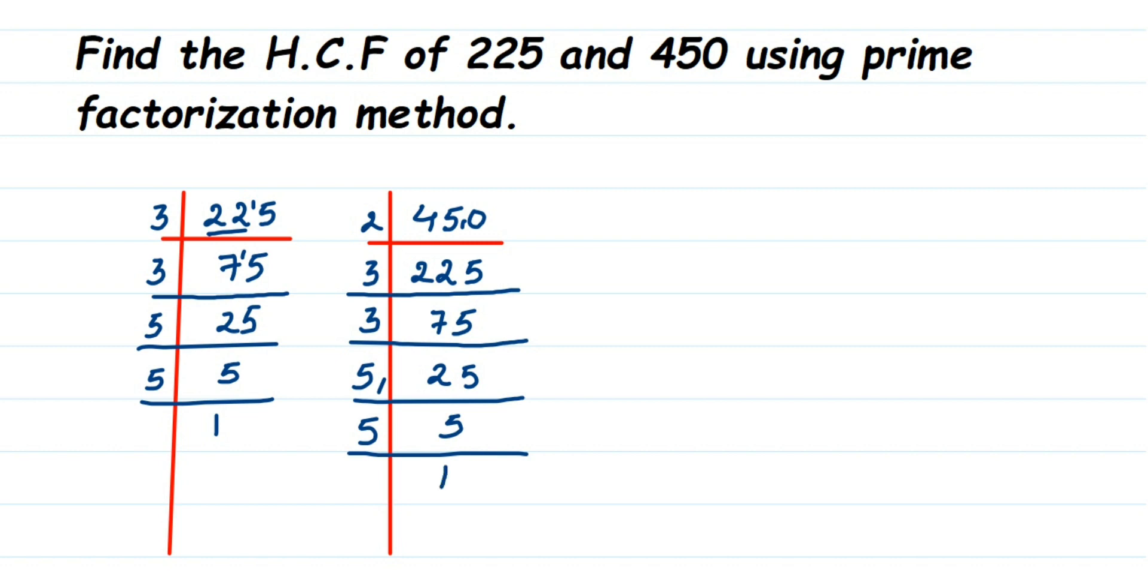Once we've done this, we're going to rewrite the factors we got. 225 can be written as - write down the prime factors - it's 3 × 3 × 5 × 5.